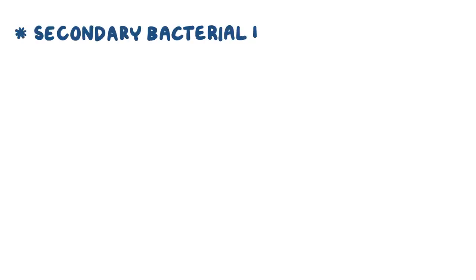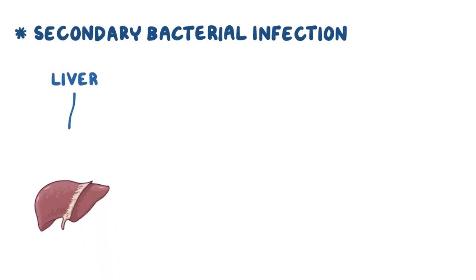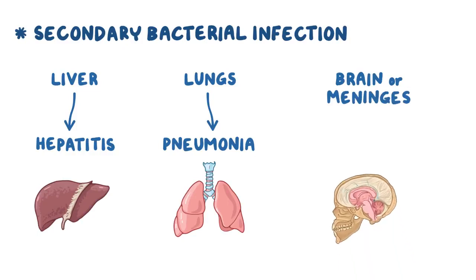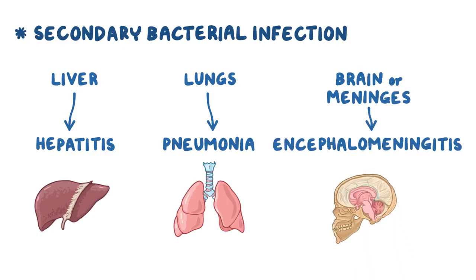With both chickenpox and shingles, the most common complication is a secondary bacterial infection of the skin lesions. If the liver becomes infected, hepatitis can occur. If the virus spreads to the lungs, we get pneumonia. If the brain or its protective membrane — called the meninges — become infected, encephalomeningitis could occur.